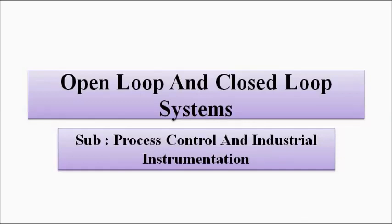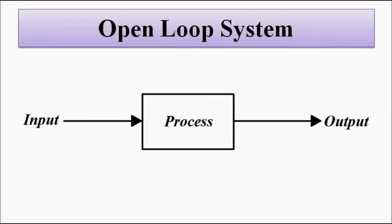In this video we are going to discuss an important concept about the control mechanism — the basic but very important one — which is the open loop and closed loop systems. We have covered this in the control system section, but here we will discuss it from the point of view of process control, from the practical point of view.